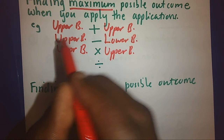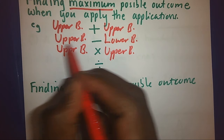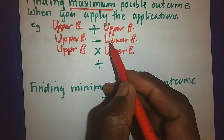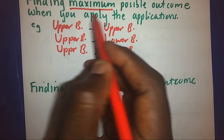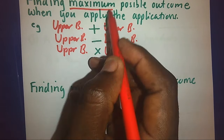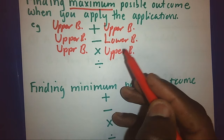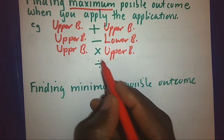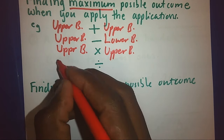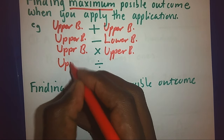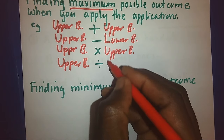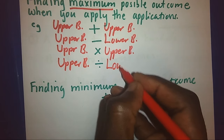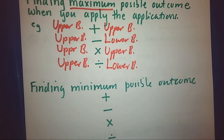This means upper bound minus lower bound will give me the maximum or the biggest possible outcome. The same with division — I should have a big number and divide by a small number so that my answer becomes the biggest possible.